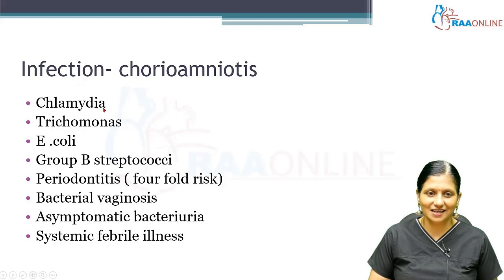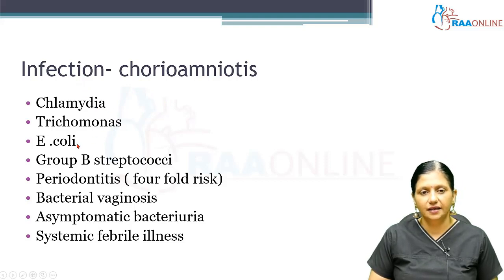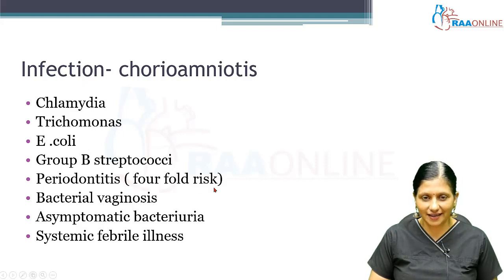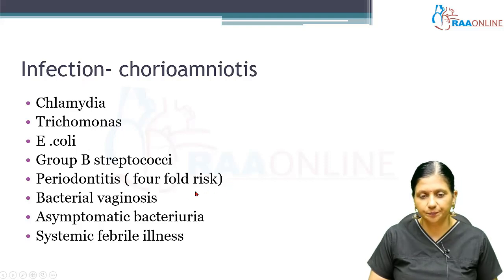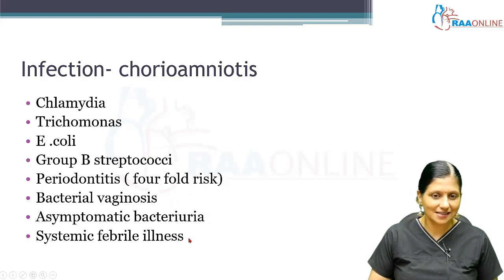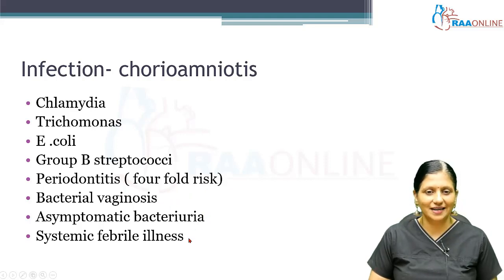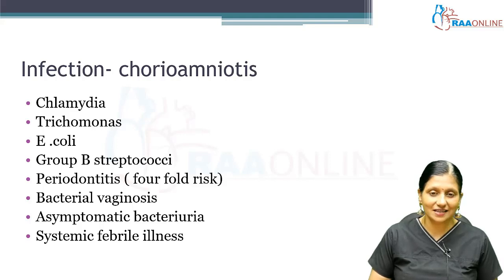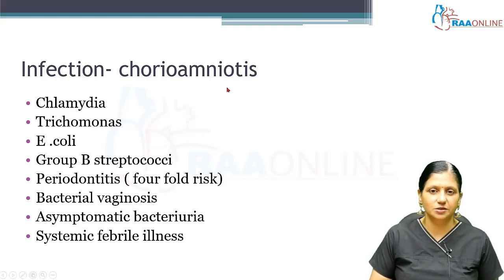Infections are a significant risk factor for preterm labor. Common pathogens include Chlamydia, Trichomonas, E. coli, Group B Streptococci. Periodontitis or dental infections carry a fourfold risk of preterm labor. Bacterial vaginosis, asymptomatic bacteriuria, and systemic febrile illnesses also carry increased risk, with the pathogenetic mechanism being inflammation of the fetal membranes — the chorion and amnion.